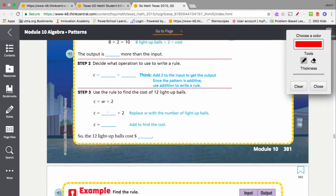Then all I have to do is substitute in the number that I'm looking for, 12 balls plus two. 12 plus two is 14. So the 12 light-up balls cost $14. That's the same thing we got when we just filled out the table. Okay, that is one way that we can express a pattern.